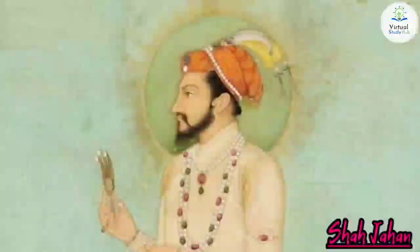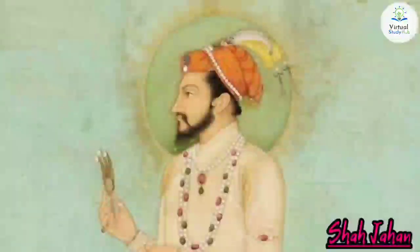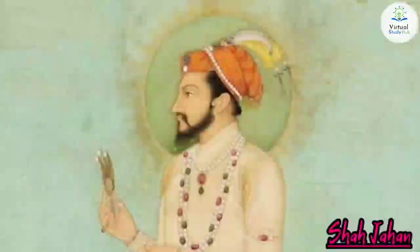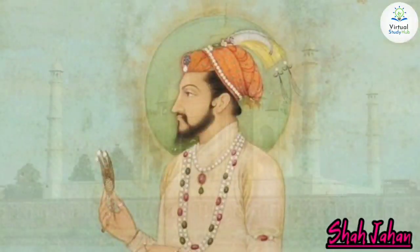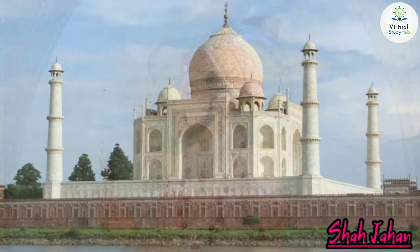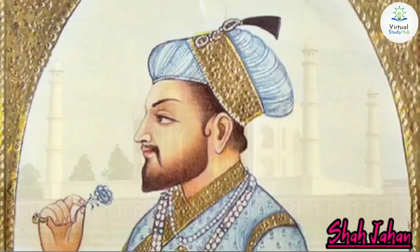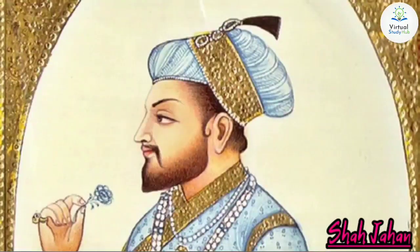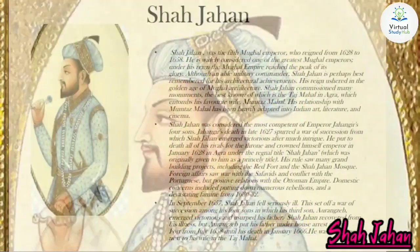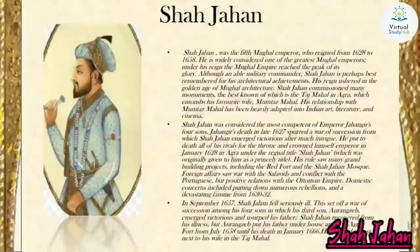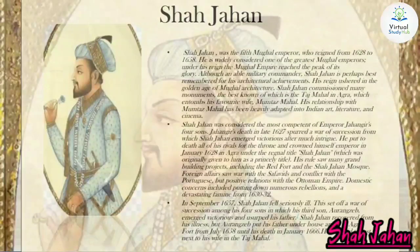Shah Jahan faced foreign wars with the Safavids and conflict with the Portuguese, as well as domestic concerns including numerous rebellions and a devastating famine from 1630 to 1632. When his favorite wife Mumtaz Mahal died in childbirth during the birth of their 14th child, he commissioned the spectacular tomb for her — the great Taj Mahal. In September 1657, Shah Jahan fell seriously ill, triggering a war of succession. His third son Aurangzeb ultimately prevailed, placing his father under house arrest in Agra Fort from July 1658 until Shah Jahan's death in January 1666. He was laid to rest next to his wife in the Taj Mahal.